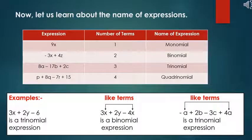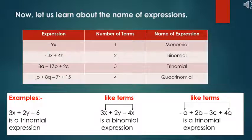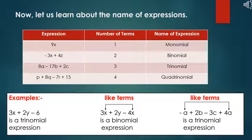Now, let's learn about the names of expressions. Look at the table. Expression 9x has 1 term, and the name of the expression is monomial. Next, minus 3x plus 4z has 2 terms, and the name of the expression is binomial.